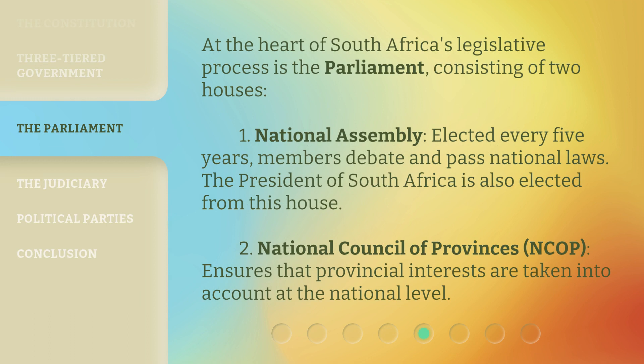At the heart of South Africa's legislative process is the parliament, consisting of two houses. One: the National Assembly, elected every five years, where members debate and pass national laws — the president of South Africa is also elected from this house. Two: the National Council of Provinces, NCOP, which ensures that provincial interests are taken into account at the national level.